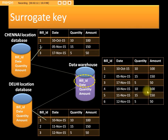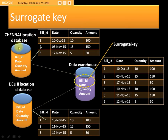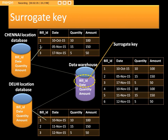In that case, the bill_id will be called a surrogate key. It is still a primary key, but it is not loaded from the source tables — it is generated by a sequence generator or procedure. A surrogate key is used when the source table does not have a primary key, or when it has duplicate key values.